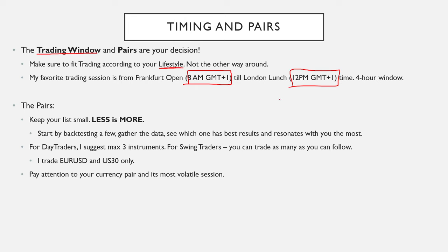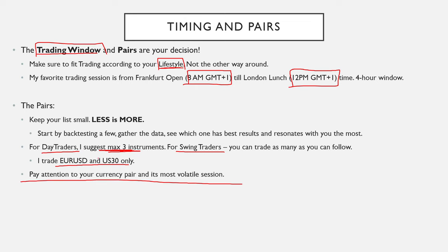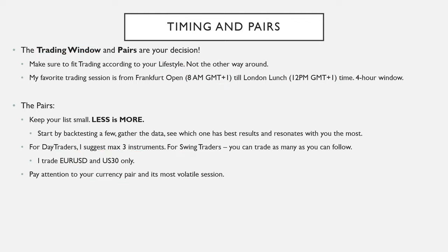For the pairs, keep your list small — less is more. Backtest a few pairs, gather the data, see which ones work best for you, and make an informed decision. Don't just listen to someone telling you to trade EURUSD or GBPUSD. For day traders on the 15-minute and lower timeframes, stick to maximum three instruments — you cannot manage more than two to three pairs if you're day trading on the one-minute. For swing traders above the 15-minute or hourly timeframe, you can trade as many as you can follow. Personally, I only trade EURUSD and US30. Also, pay attention to your currency pair's most volatile session — if trading Asia, don't trade EURUSD; if trading New York, don't trade an Aussie pair.